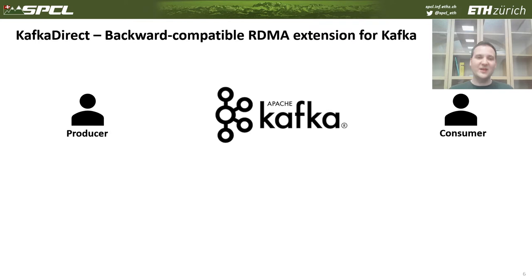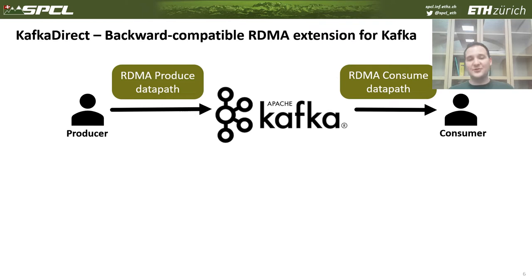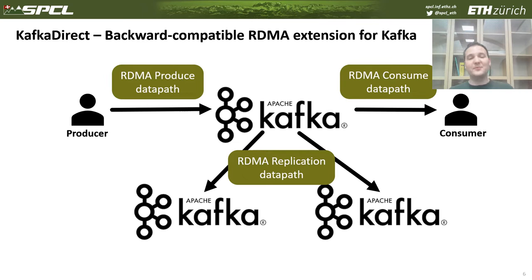We propose to use RDMA to completely remove this excessive data copying and to reduce CPU load on Apache Kafka servers. We offer RDMA data paths for producers as well as consumers. In addition, Apache Kafka is capable of replicating records to remote servers, so we also implemented an RDMA replication data path that would use RDMA to replicate records at low cost.